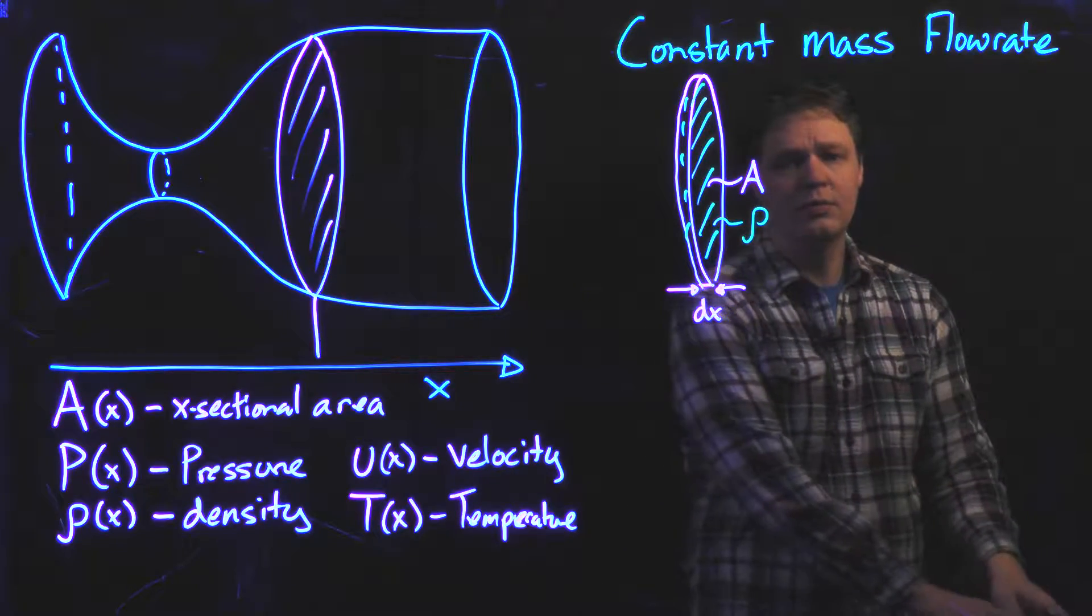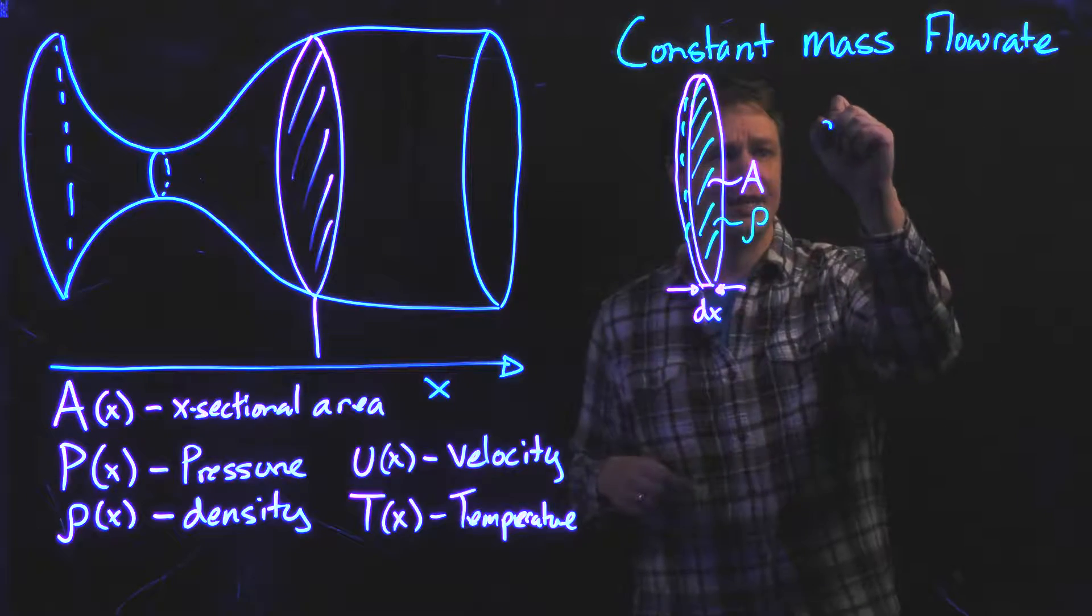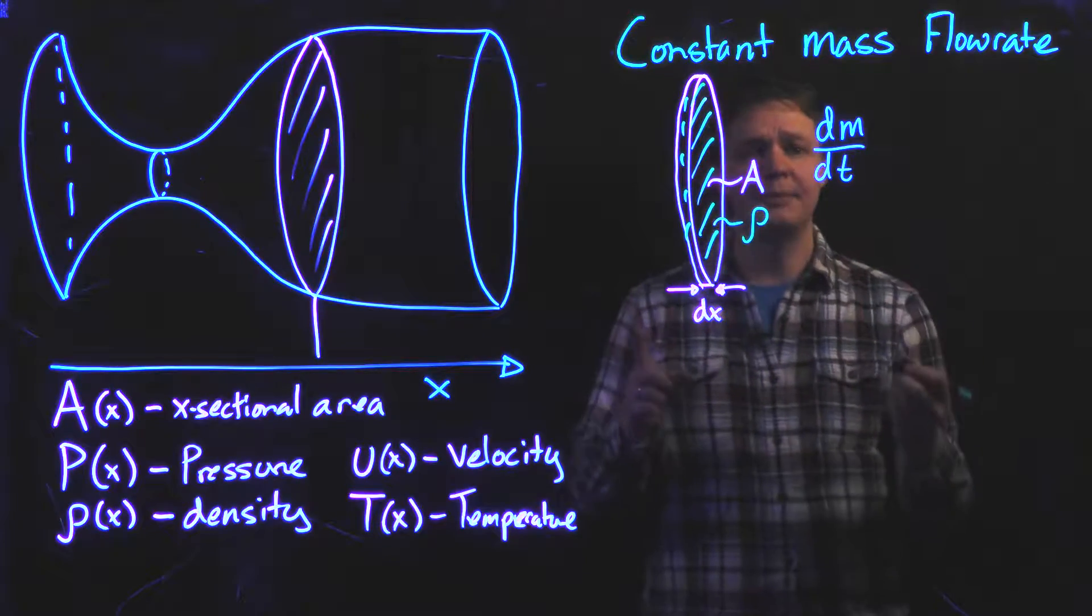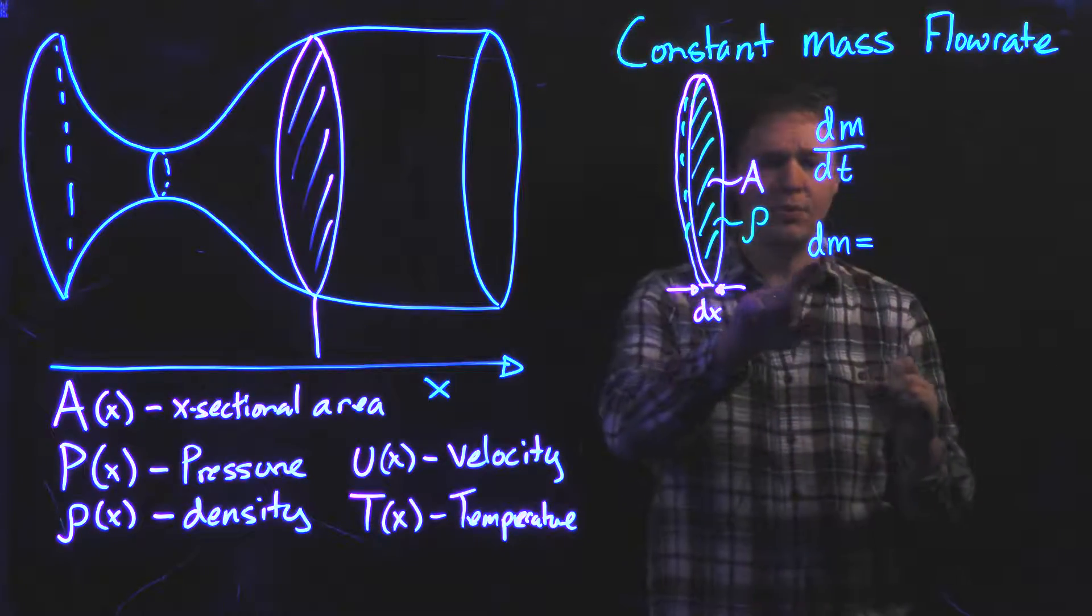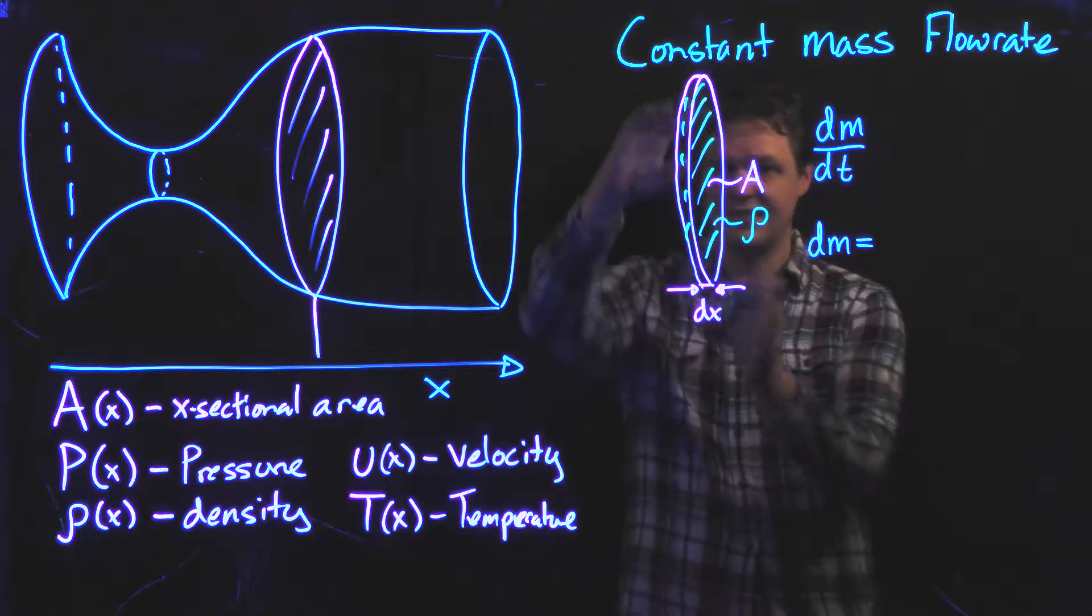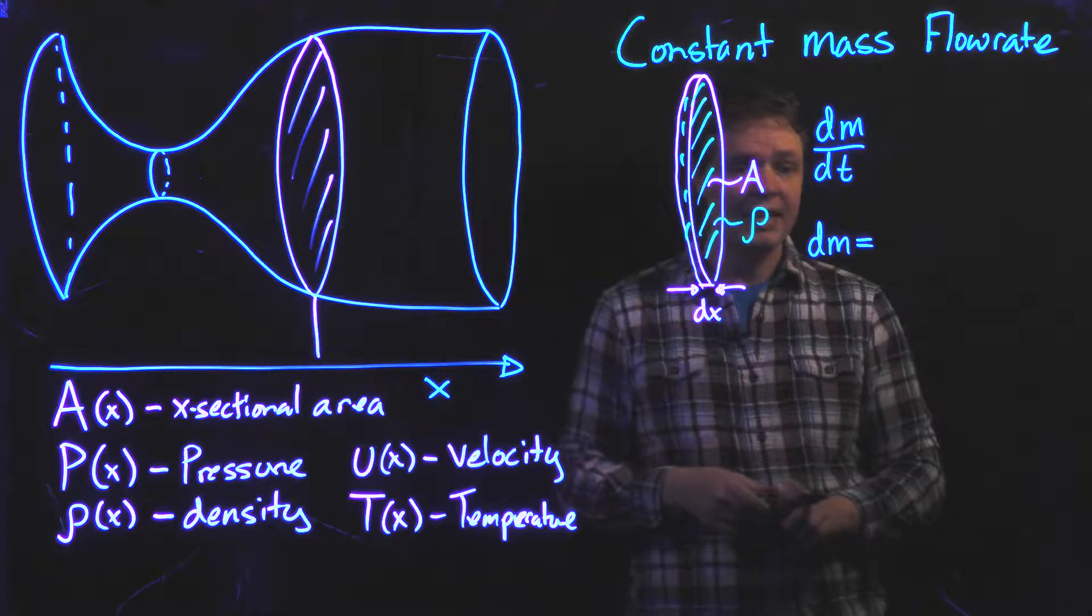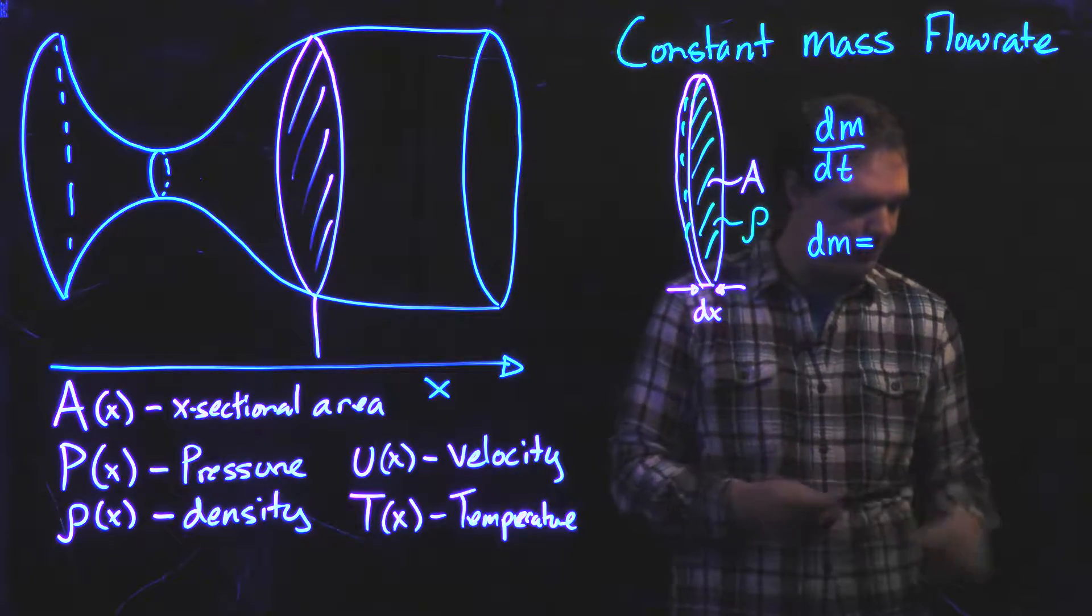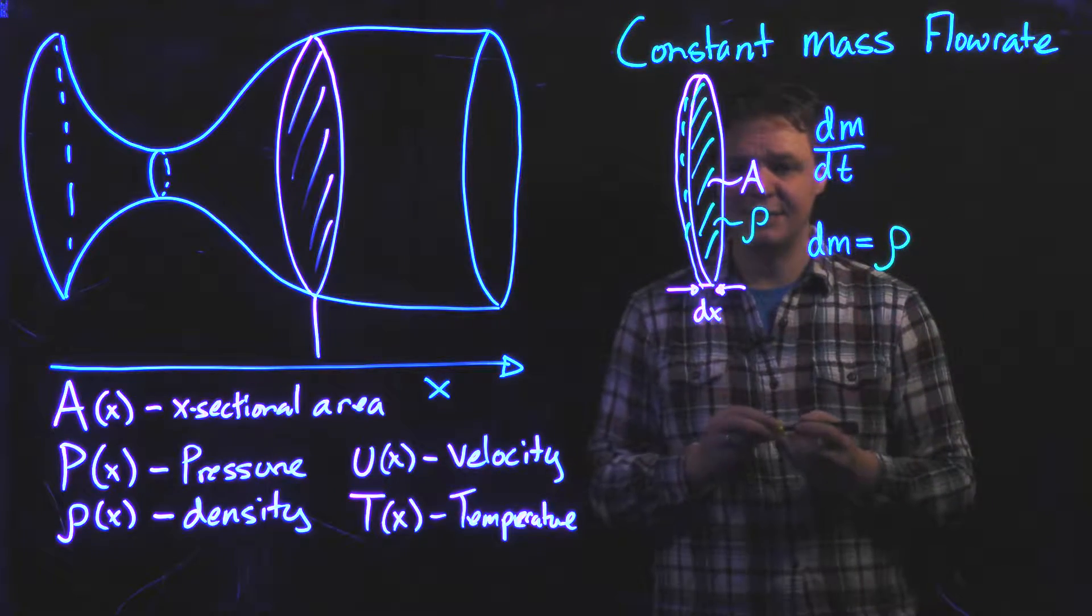We know what we want. We want the mass flow rate, which is by definition the change in mass over the change in time, to be constant. What I'm going to look at is this infinitesimal portion of mass in this thin slice of exhaust gas that I have.